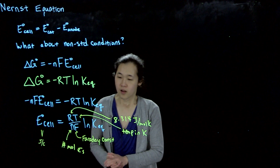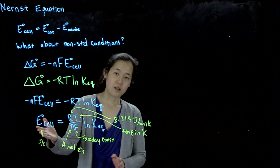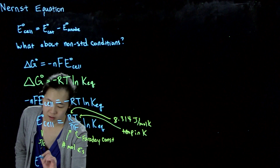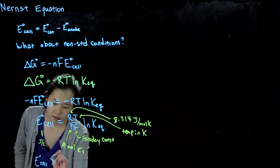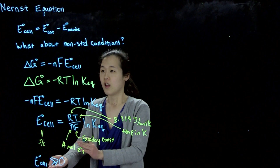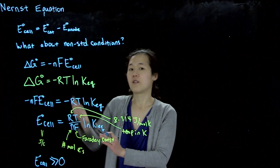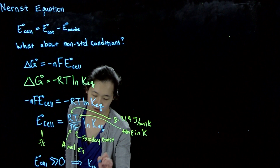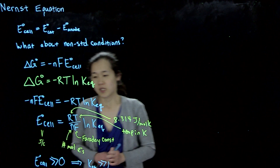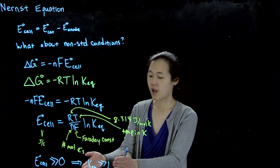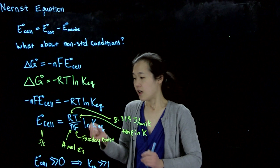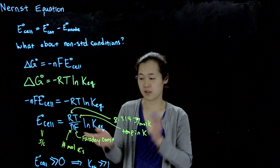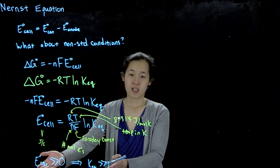If we know our standard cell potential, we can know how likely the reaction is to proceed. If E°cell is greater than zero (very positive), then the free energy would be very negative, so the reaction would be spontaneous, and this implies that K equilibrium constant would be greater than 1 — meaning the reaction proceeds forward toward products. On the other hand, if we have zero cell potential, our reaction will not proceed in either direction. So we can relate these two values, which is great.